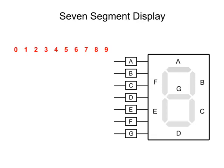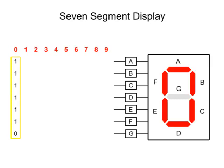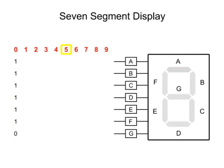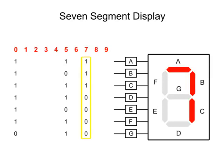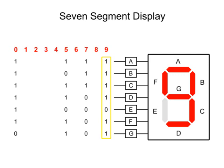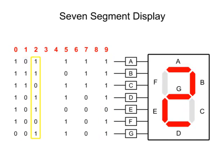For example, to display a zero, a binary string input of ones at pins A through F and a zero at G will activate all the segments but segment G. To display a five, all but pins B and E would need an input of one. Seven is formed when pins A, B, and C get an input of one while the other pins receive zeros. A nine can be generated by inputting ones to all but the E pin, and so on for the remaining numbers.